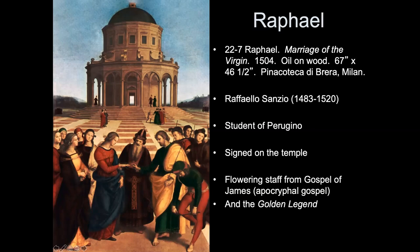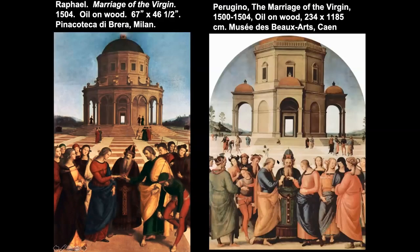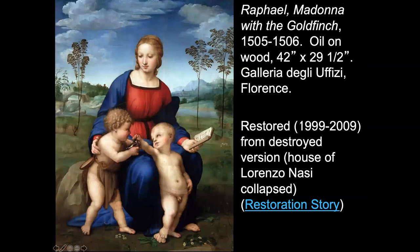You probably recognize the style because we looked at Perugino's work towards the end of the early Renaissance — the same super huge rational space is going on. You might think the student is better than the teacher, the student is certainly more famous. But eventually Raphael saw what Leonardo was doing and was really impressed and started to change his style.